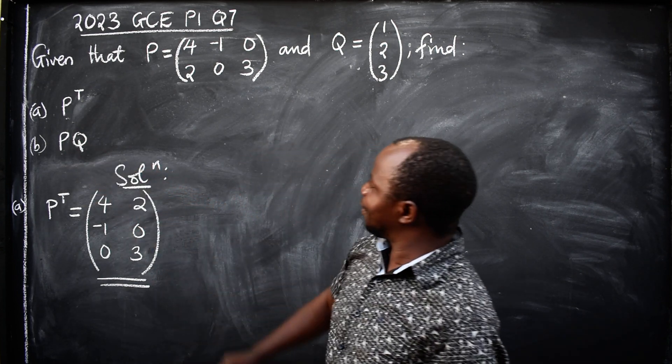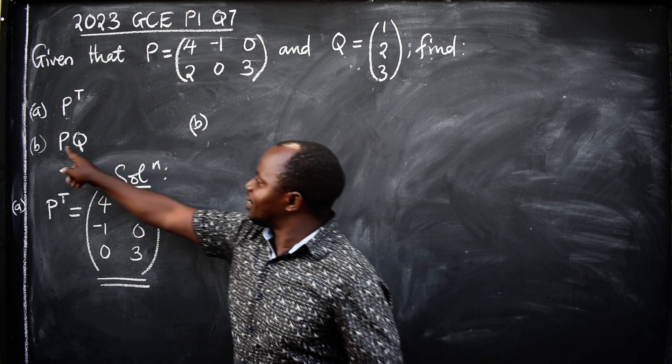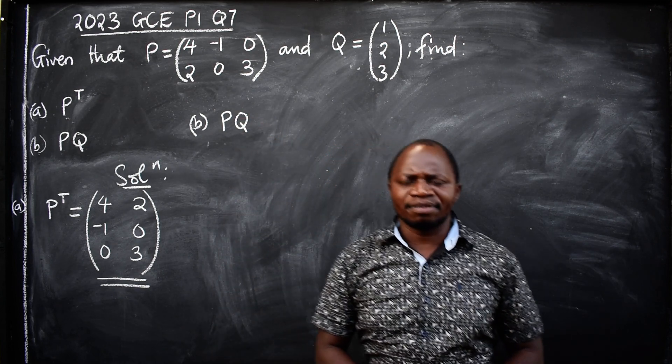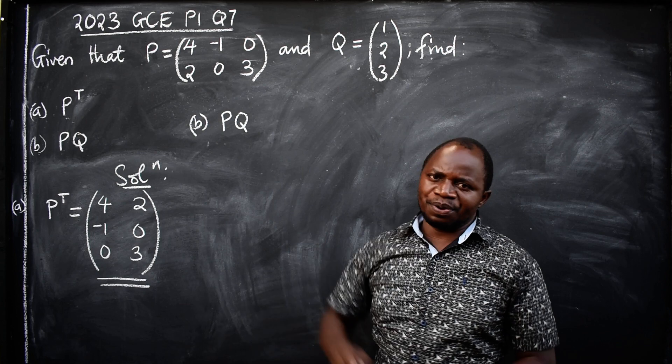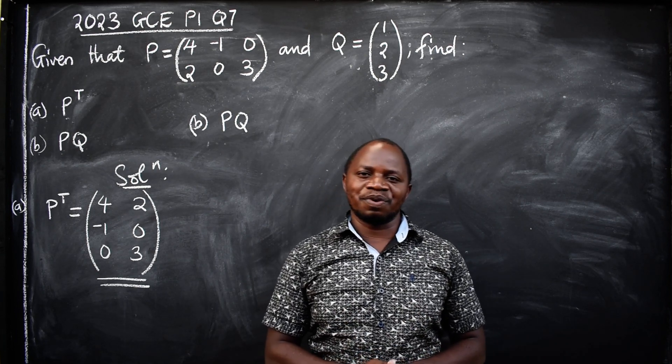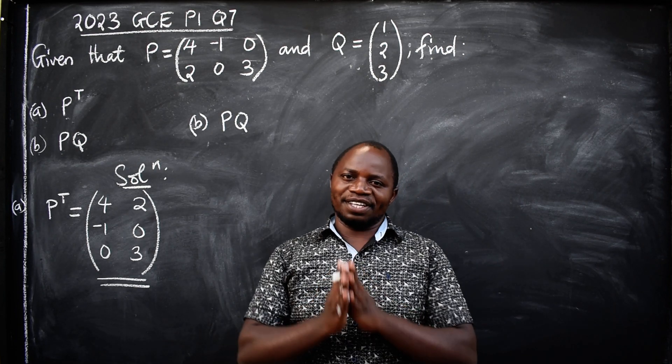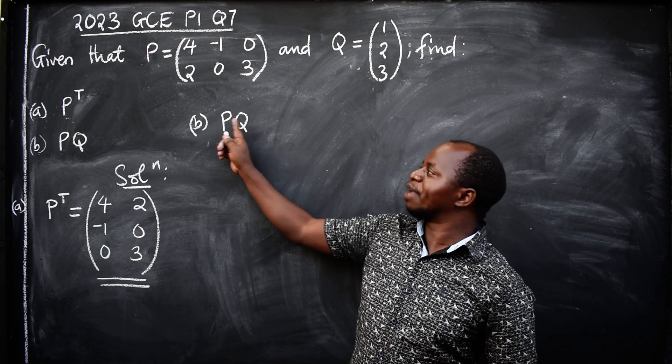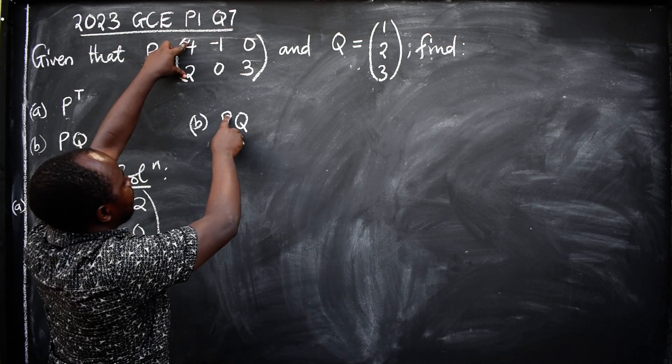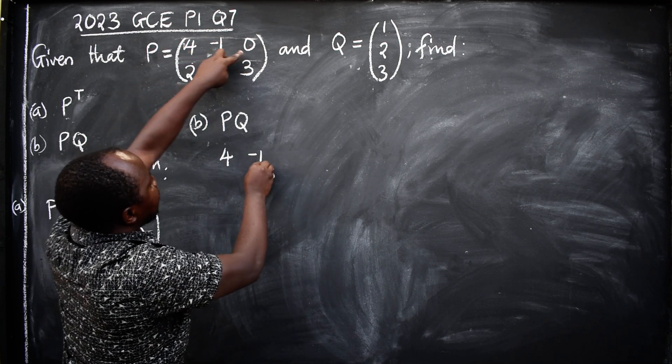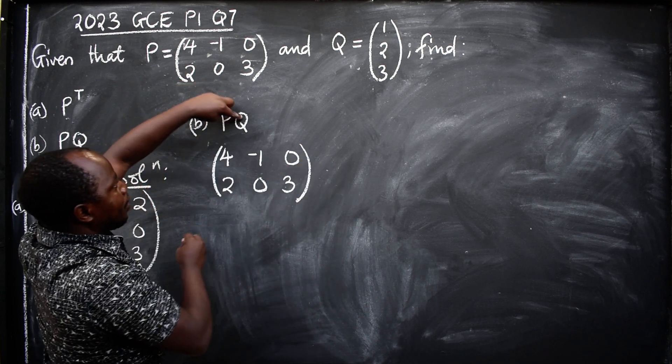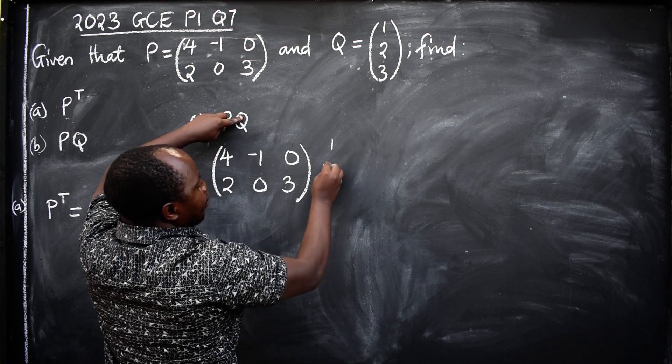Part B, PQ. If there is no operation, if there is no sign, then they're asking you to multiply the matrices. So multiply matrix P by matrix Q. Let's substitute. What is P? P is (4 -1 0; 2 0 3). What is Q? Q is (1; 2; 3).